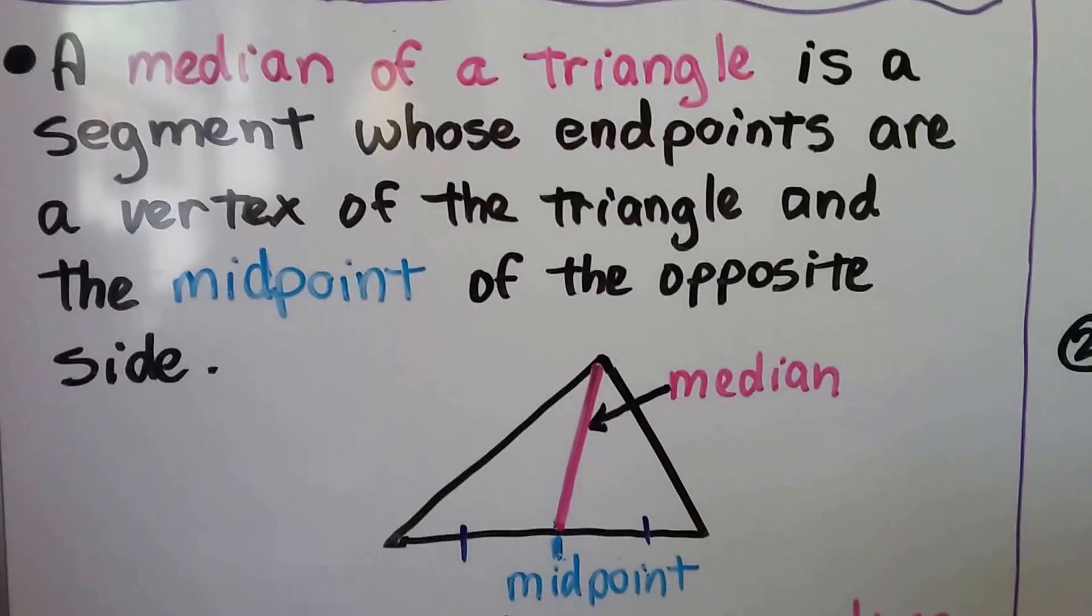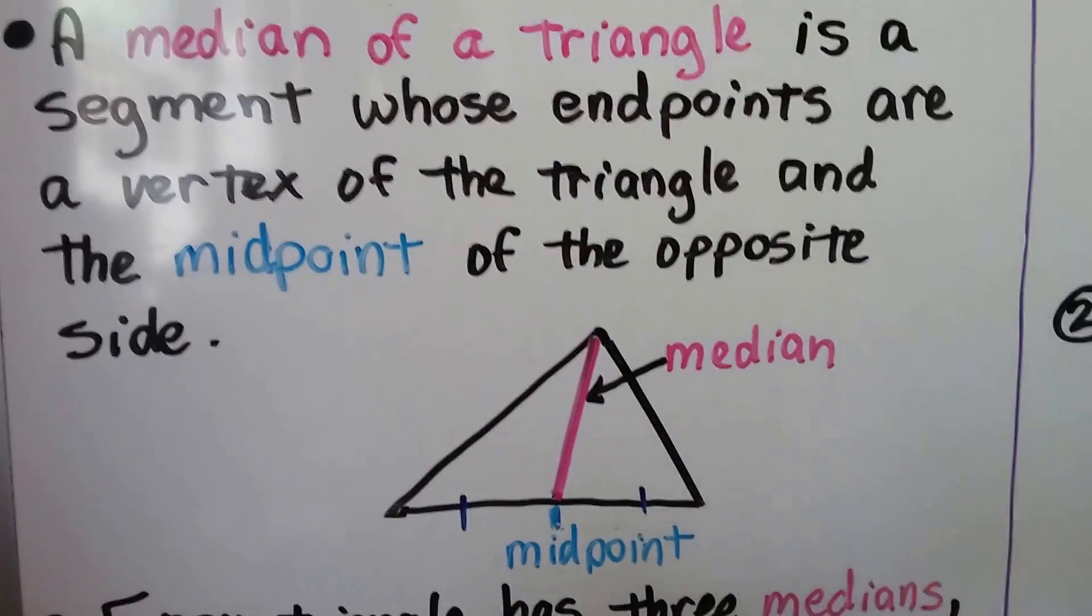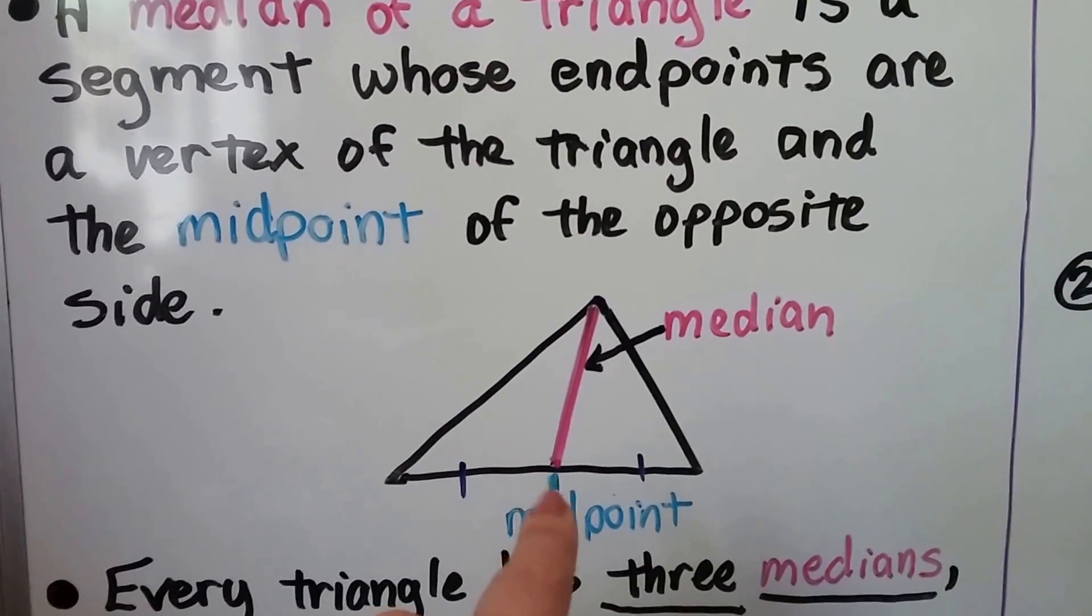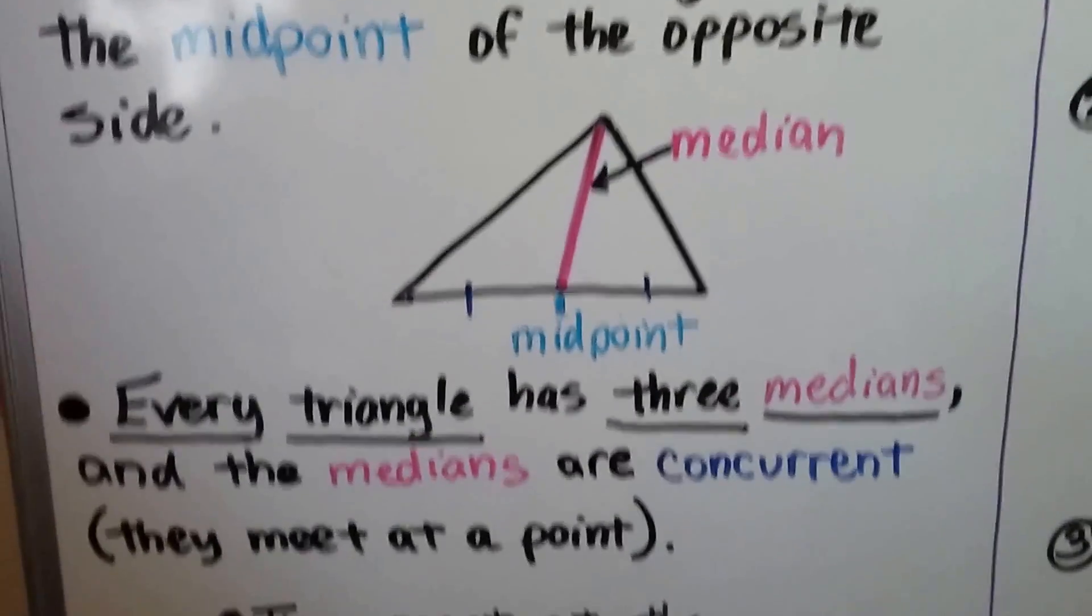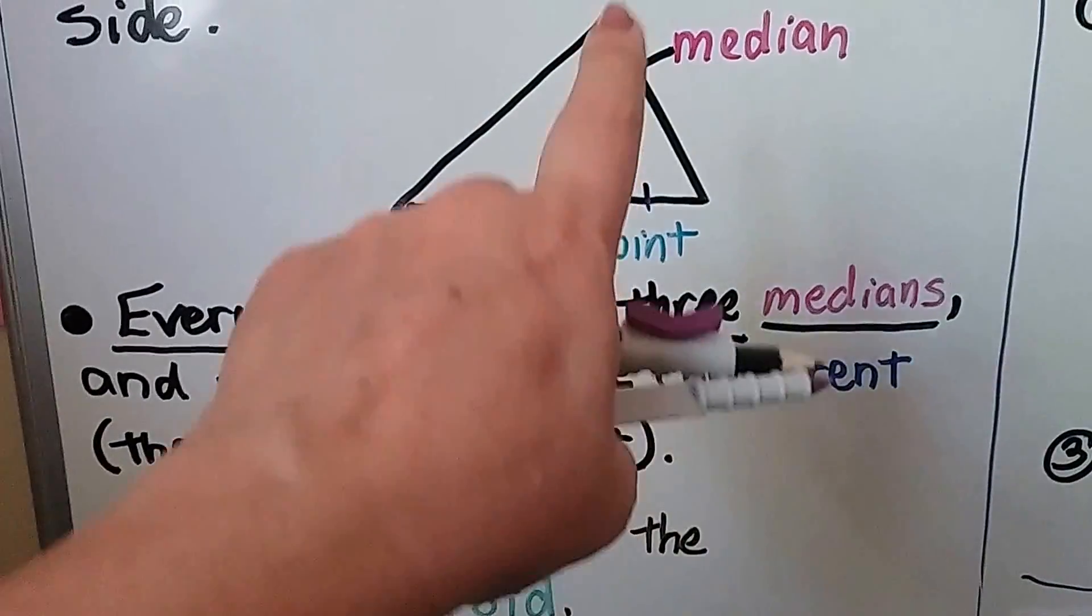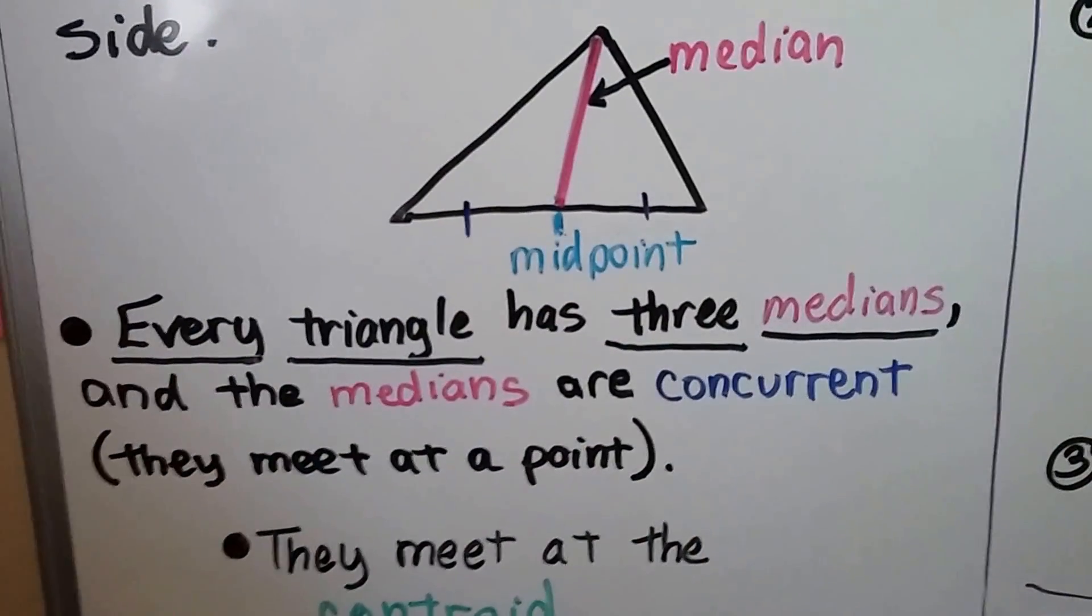A median of a triangle is a segment whose endpoints are a vertex of a triangle and the opposite side at the midpoint. That's the median. And every triangle has three medians. Well, that makes sense. It's got three vertices, right? And there's three midpoints, so it has three medians.